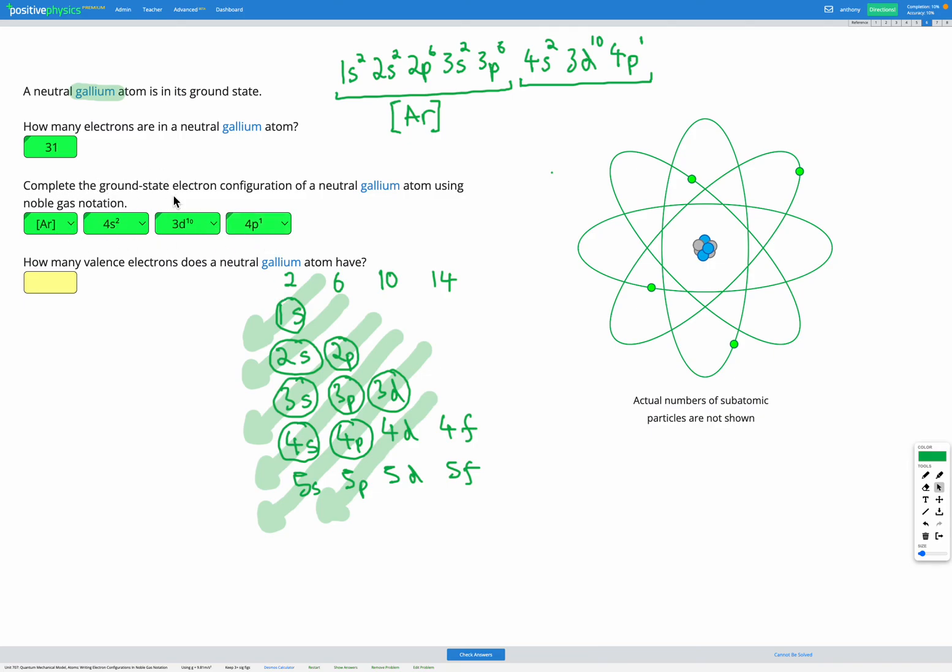So the noble gas notation is just a shortcut. It means instead of writing out the whole thing, we can cut out whatever the nearest noble gas was, which for us was argon, and just add on then the extra bit. So final question, how many valence electrons do we have? So looking at our electron configuration, 4 is the highest energy level filled. And we've got 4s and 4p with electrons in them, with a total of 3 electrons there. Remember the 3d electrons don't count for our valence because they're at energy level 3, which isn't the highest energy level, 4 is. So here we have 3 valence electrons.